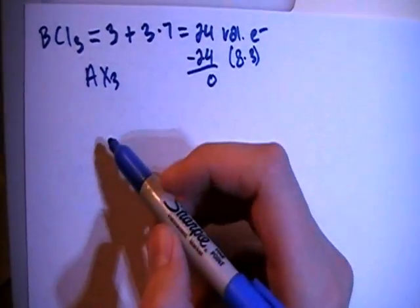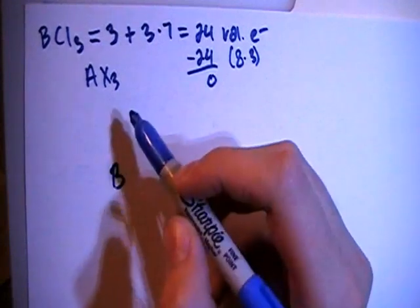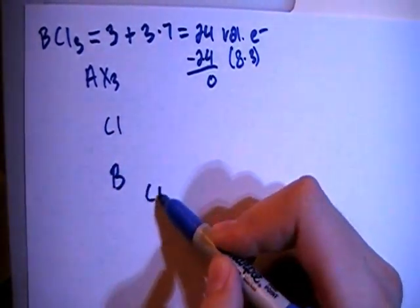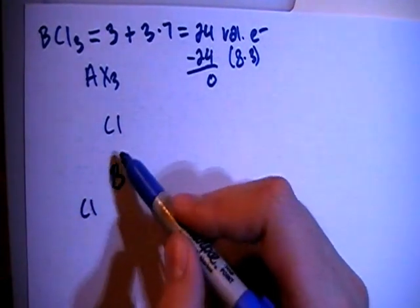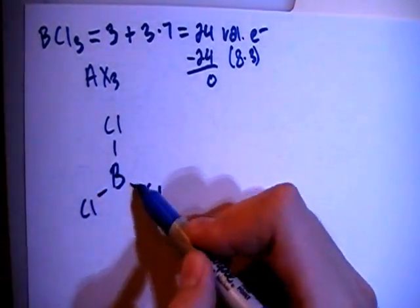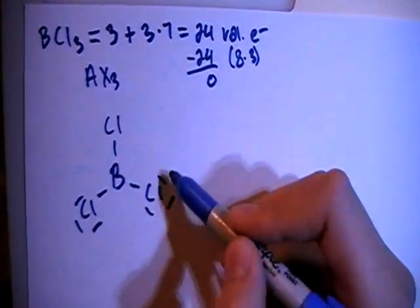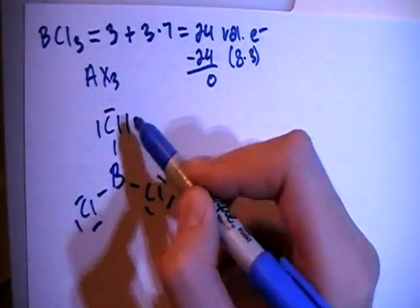So let's go ahead and draw this structure. We've got boron in the center and 3 surrounding chlorines. Let's go ahead and single bond all of them together, and then fill in each of the chlorines octets on the surrounding peripheral atoms.